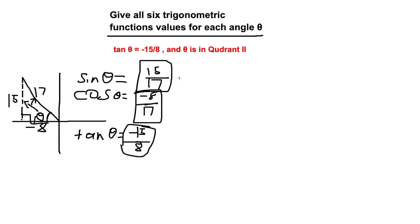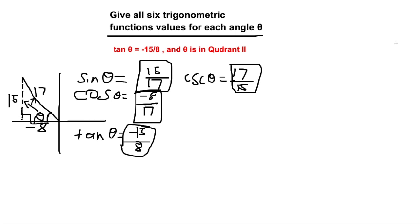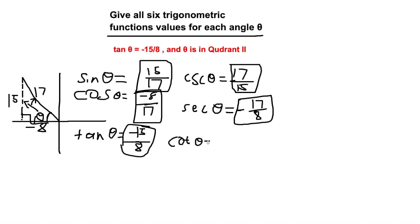Next we find the reciprocal functions. Cosecant of theta is the reciprocal of sine, so it's 17 over 15. Secant of theta is the reciprocal of cosine, so it's 17 over negative 8. Cotangent of theta is the reciprocal of tangent, so flipping the numbers gives us negative 8 over 15.